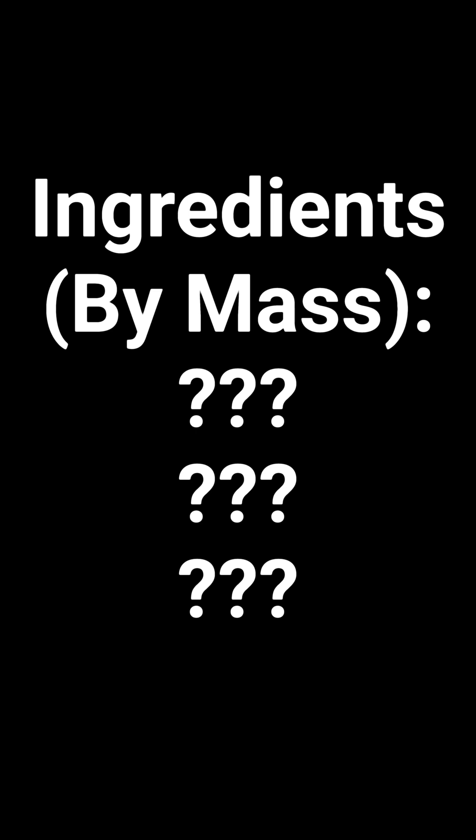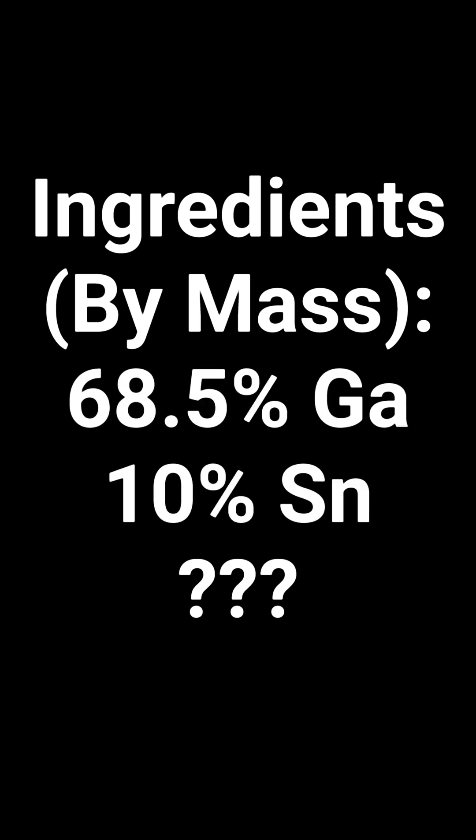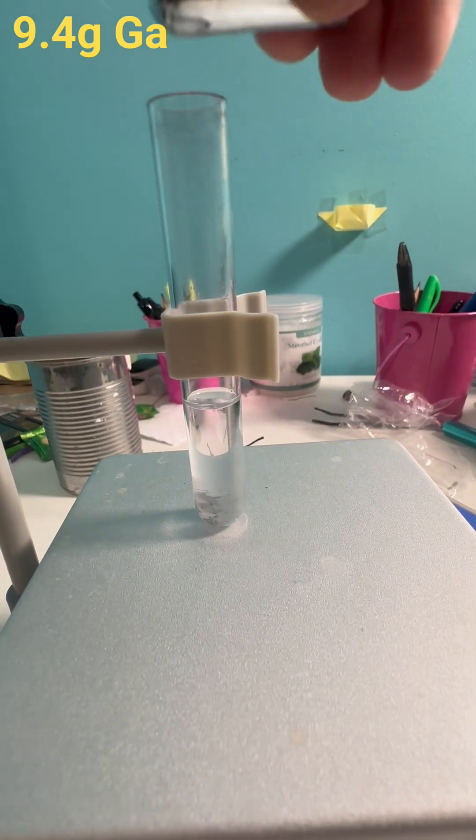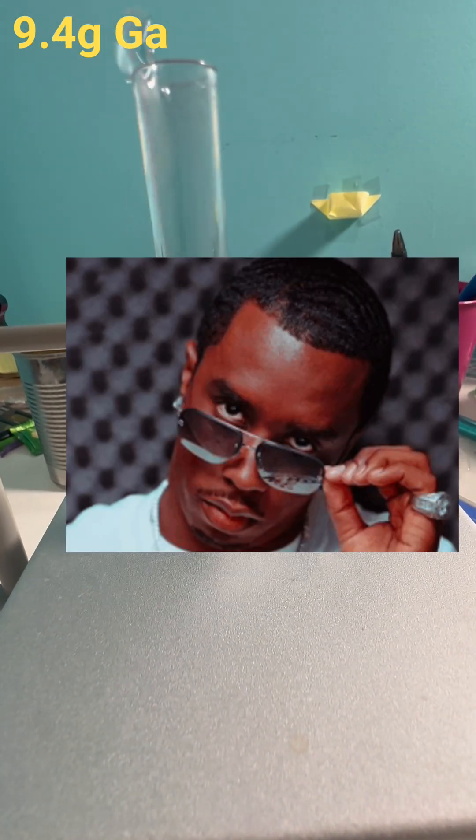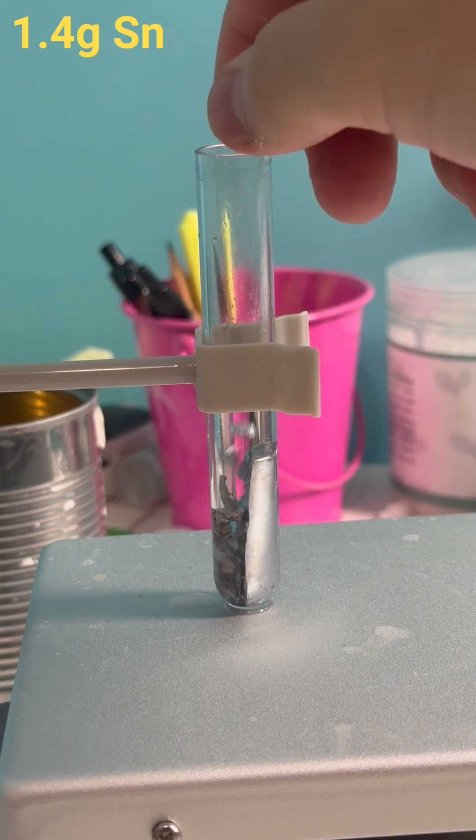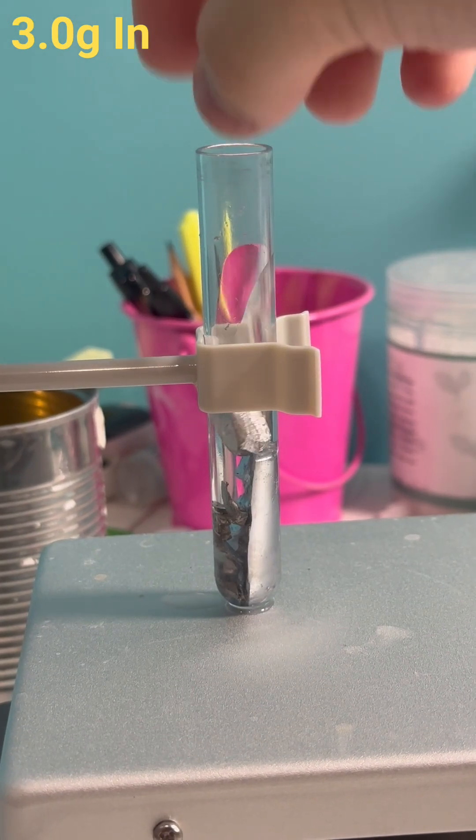In order to make this alloy, we need three ingredients: gallium, tin, and indium. First, I add around 9.4 grams of gallium to a test tube filled with baby, I mean mineral oil. Then, I add 1.4 grams of tin. Finally, I add 3 grams of indium.